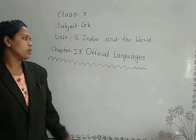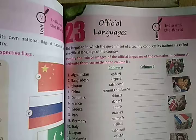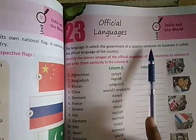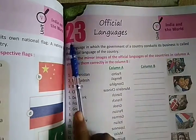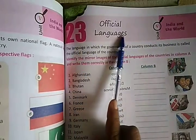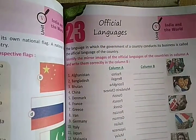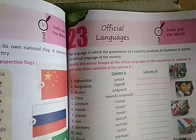So in this video, Chapter 23, Official Languages, Class 3, Subject Detail. Now start — Unit 5, India and the World, Chapter 23, Official Languages. 'Official Languages' means 'adhikari bhasya'.